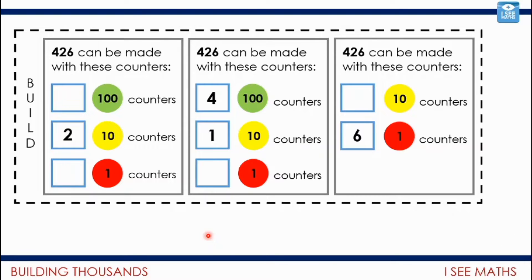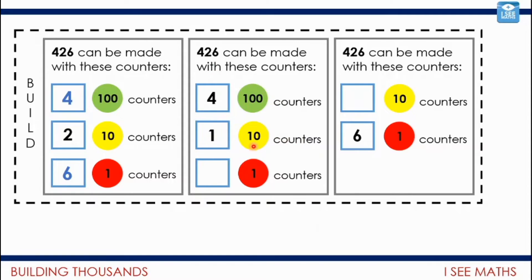Let's have a look at the answers. In the first example, we've got two tens — that's 20 — so the rest must be four hundreds and six ones: four hundreds, two tens, and six ones. That's the standard way of making 426. How else can it be made? With four hundreds and one ten, that's 410, so we need 16 ones to reach 426. And in the third example, we have six ones, so we need 42 tens to make up the rest — 42 tens is 420.